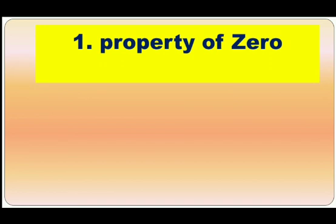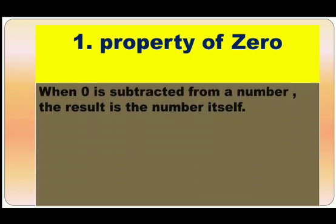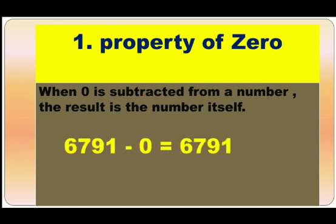First, property of 0. When 0 is subtracted from a number, the result is the number itself. Here, in this example, when 0 is subtracted from the number 6791, we get the number 6791, which is the number itself. It means whenever 0 is subtracted from any number, we always get the same number.